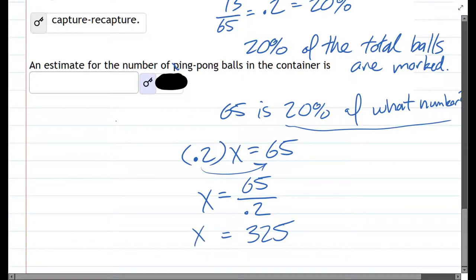So that's the total number of ping-pong balls, 325.